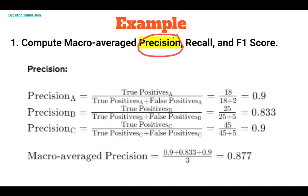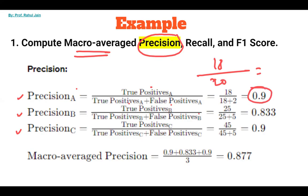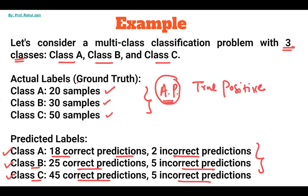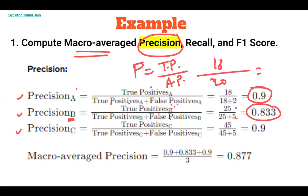For macro average precision, we separately calculate precision for each class. Precision is true positive divided by true positive plus false positive, which equals true positive divided by actual positives. So precision for class A is 18 divided by 20. You can also call precision as true positive divided by actual positives — where actual positives are 20, 30, and 50. Precision for class C is 45 divided by 50.